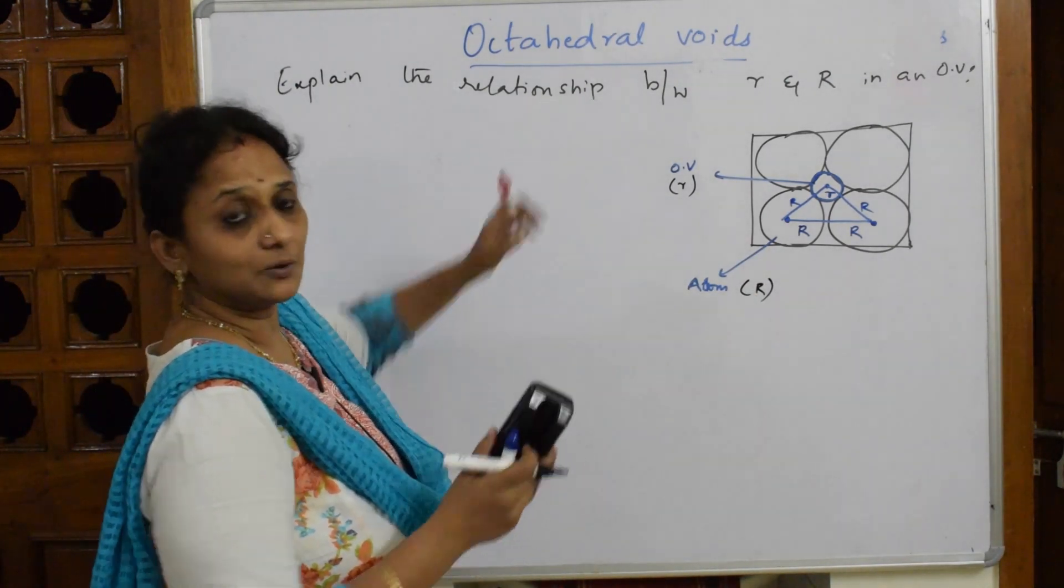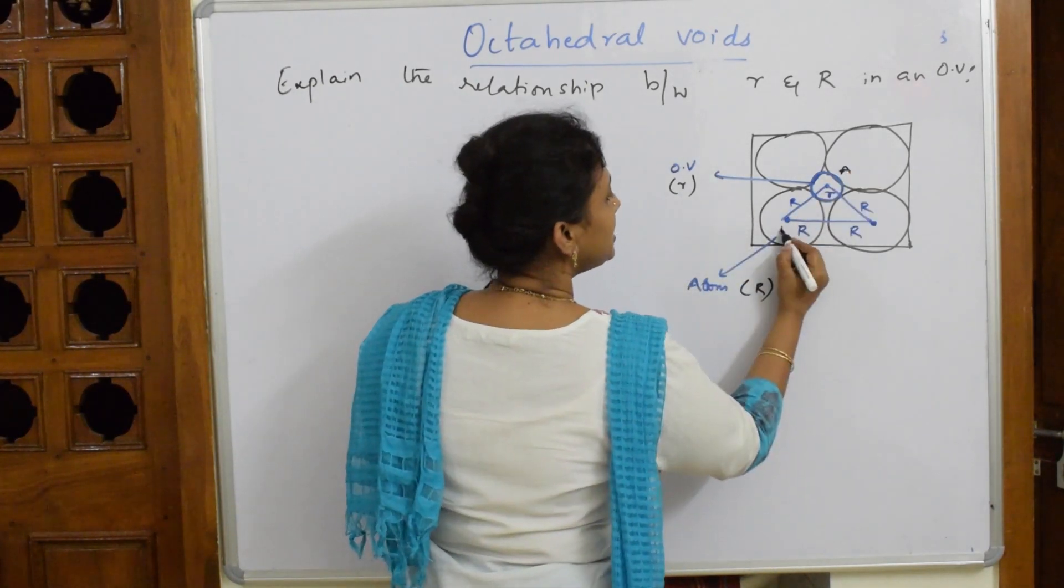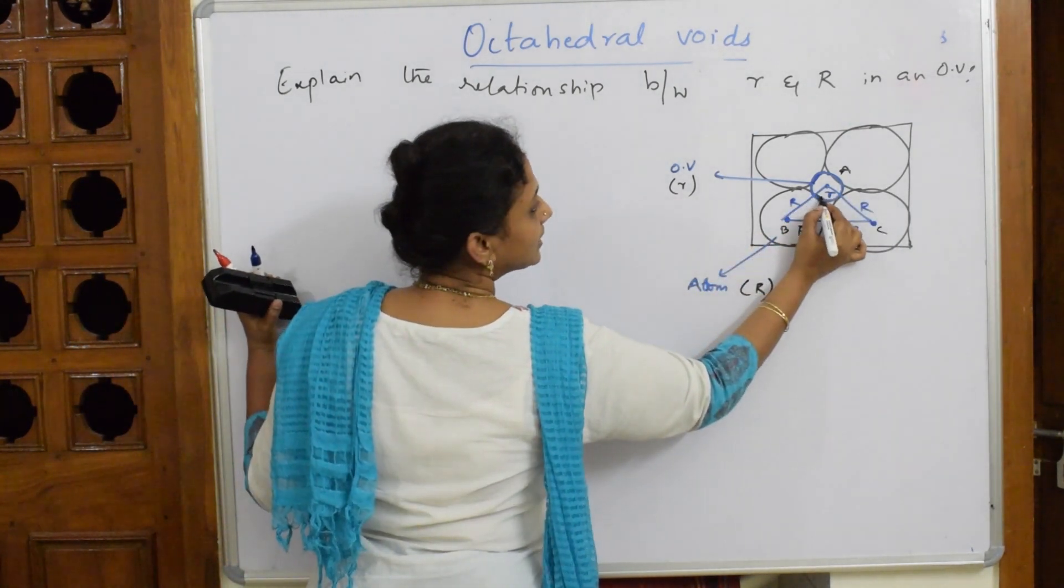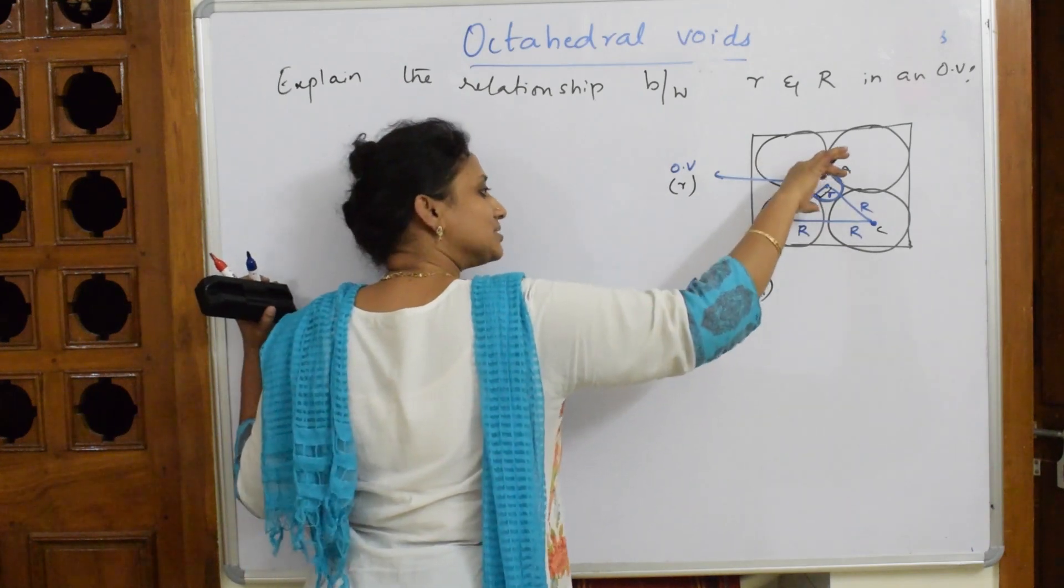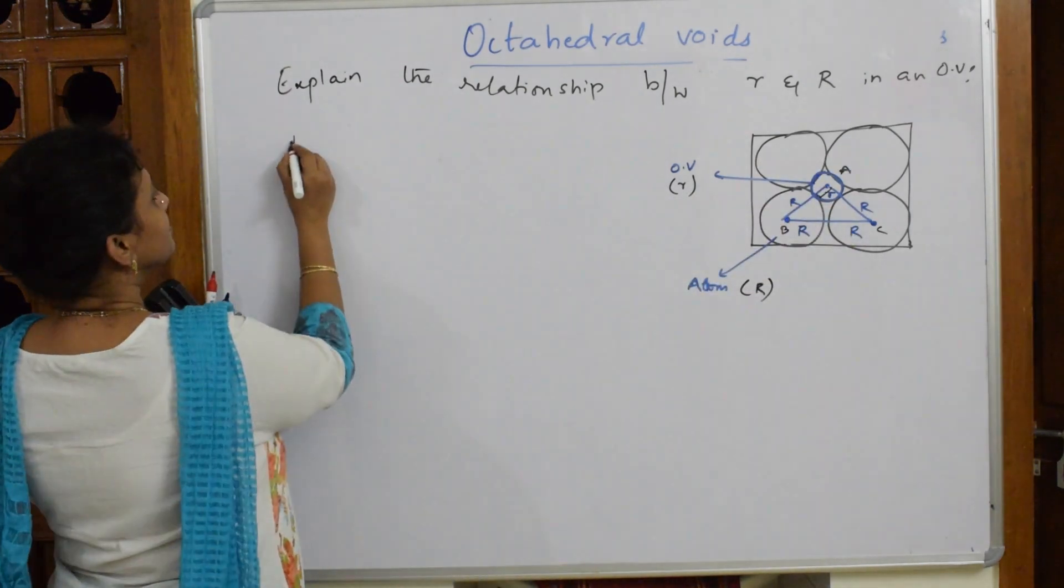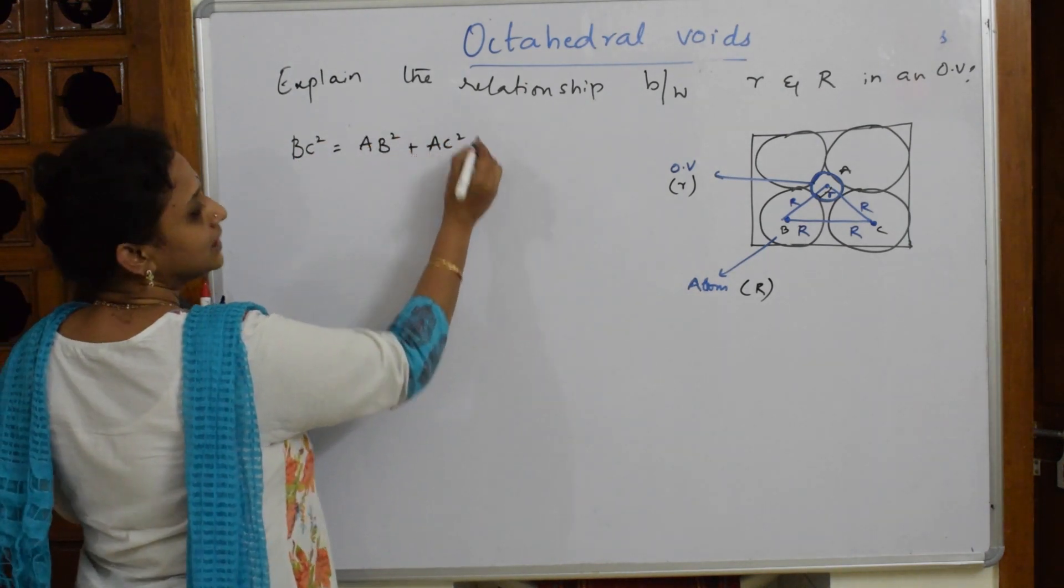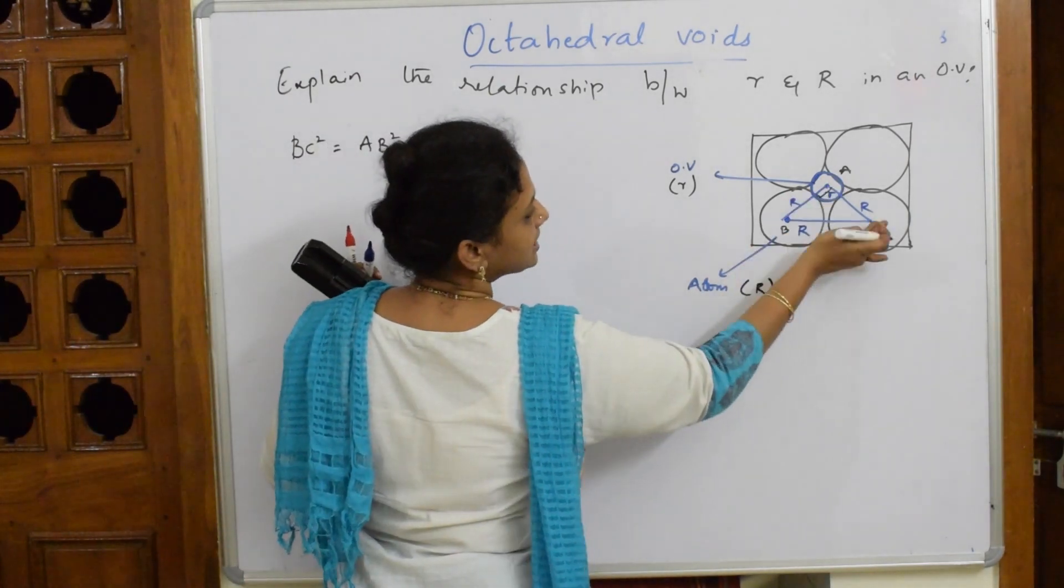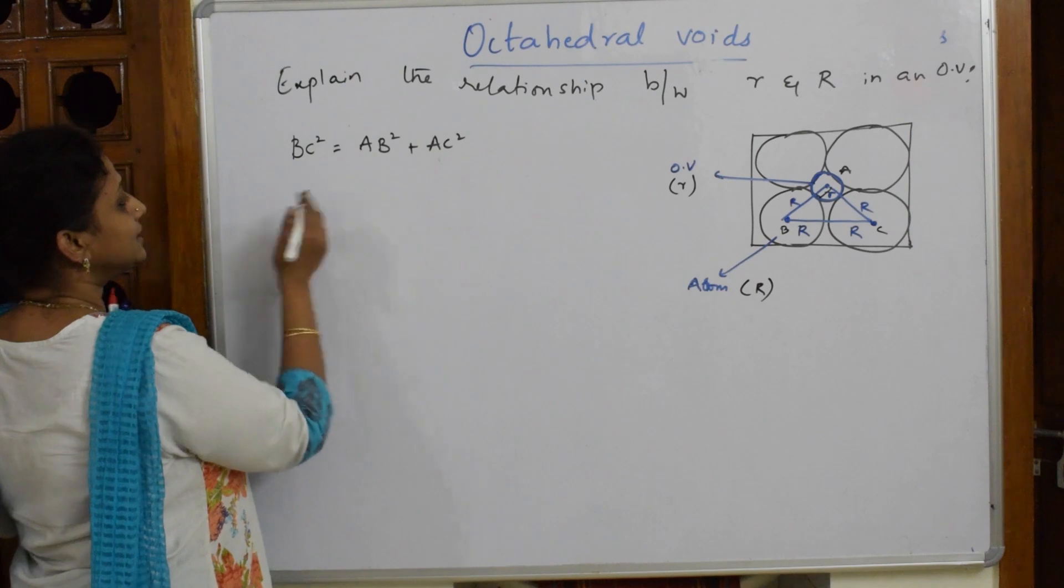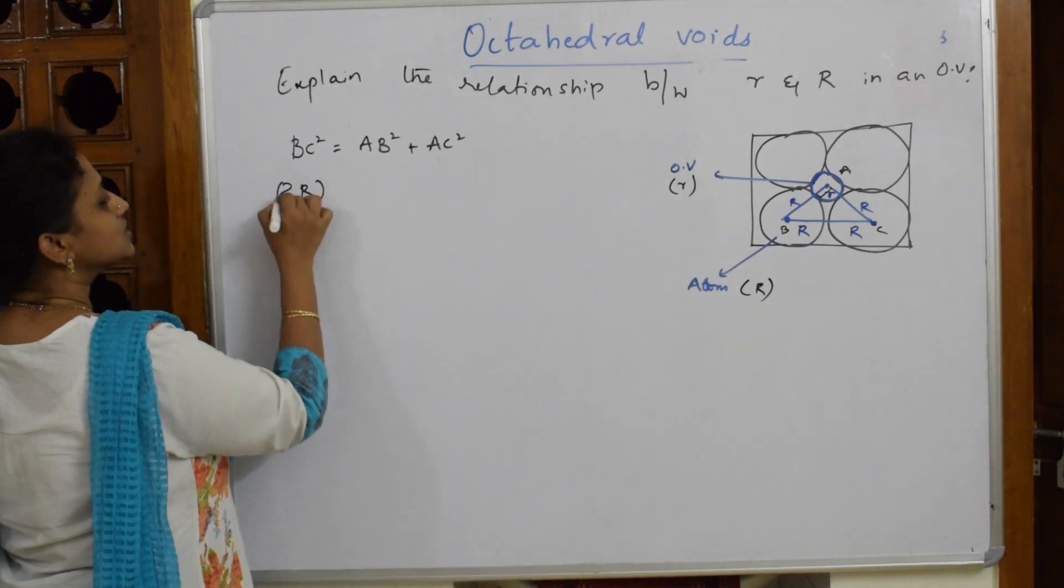I'm going to prove this now. I am labeling this as A, this is B, this is C. Now this is your right angle triangle and this is your hypotenuse. So start writing: BC² = AB² + AC². So what is BC²? You have two r's, so 2r whole square. What is AB² now? You have small r plus R whole squared.